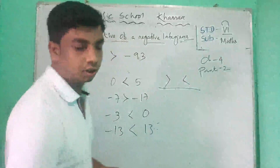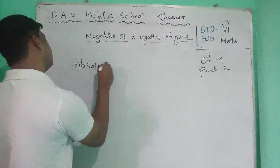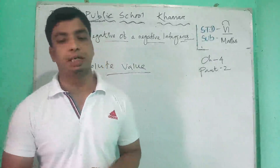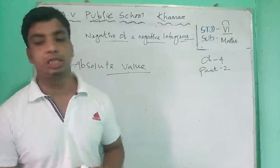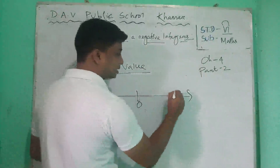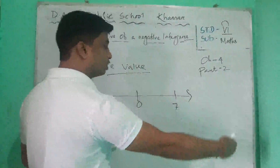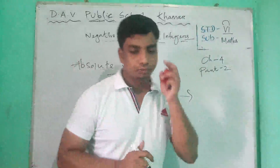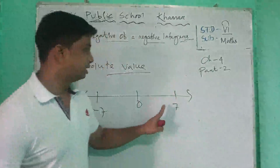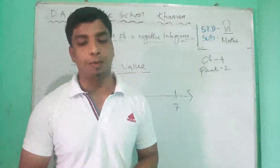Next is absolute value. What is absolute value? Both plus 7 and minus 7 represent 7 units from 0. Plus 7 is in the positive direction from 0, and minus 7 is in the negative direction from 0. If we draw a number line, 7 and minus 7 are both on it. Since both are the same number of units from 0, we say they have the same absolute value.